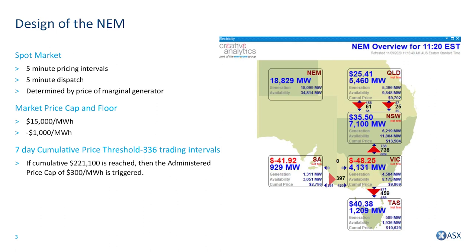We can view current spot prices for each five-minute pricing interval in each region. We can also view flows over the various interconnectors. In the market design, there is a cap and a floor price for each pricing interval. The spot market produces a huge amount of data, which can be viewed on platforms like the one from Creative Analytics that we have just looked at.